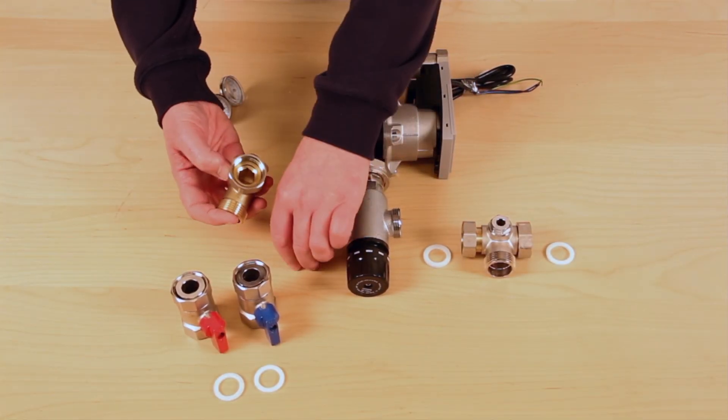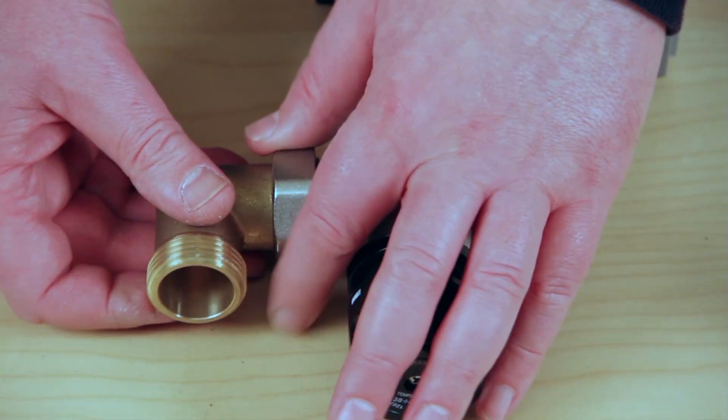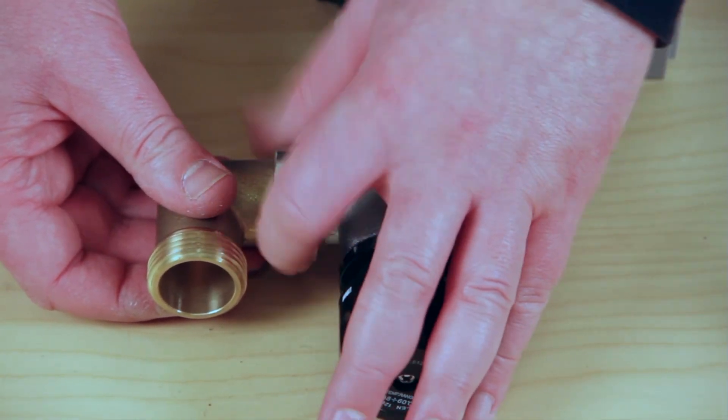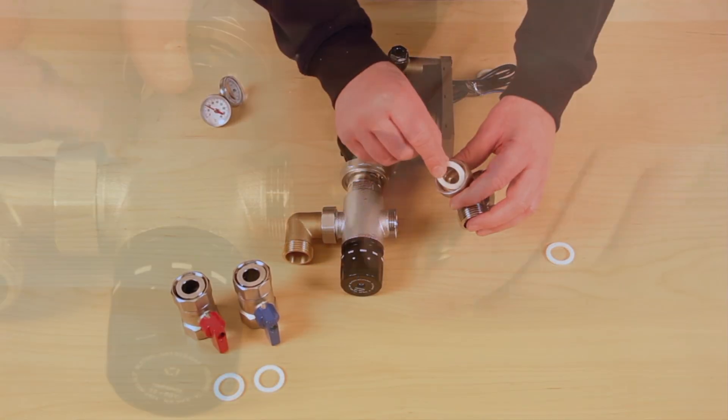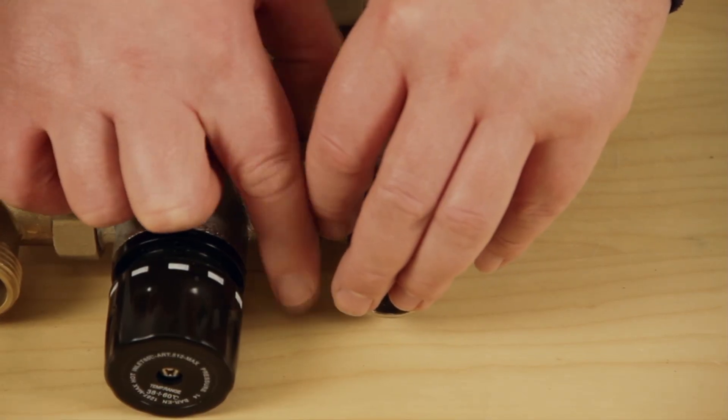Take the lower flow elbow, fit the washer and screw onto the inlet side of the temperature control mixer. Locate washer into the lower return temperature gauge housing and screw onto the return side of the temperature control mixer.